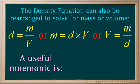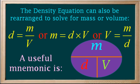A mnemonic is a tool to help us remember something. A useful mnemonic for density is a circle with an m on top and a d and v on the bottom.